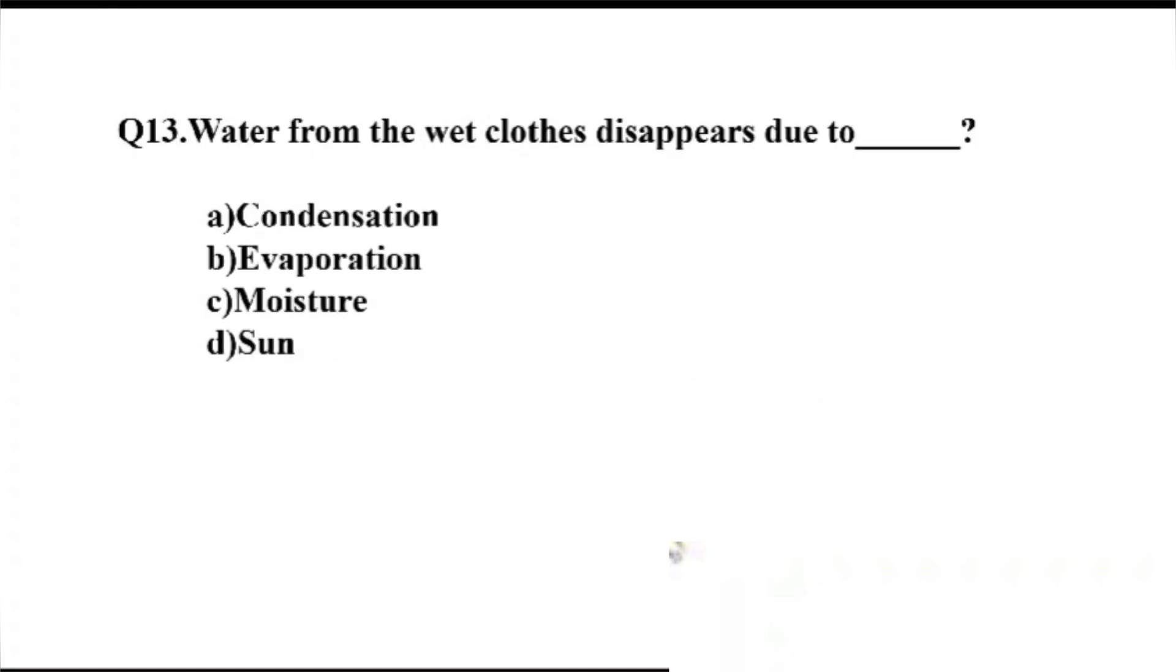Question number 13. Water from the wet clothes disappears due to dash. Option A, condensation. B, evaporation. C, moisture. D, sun. The right answer, Option B, evaporation.